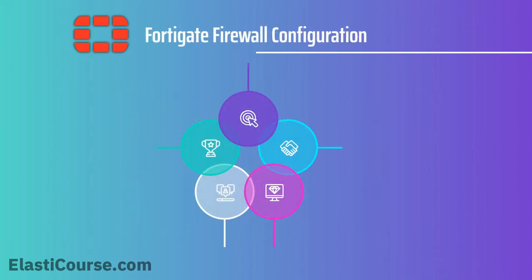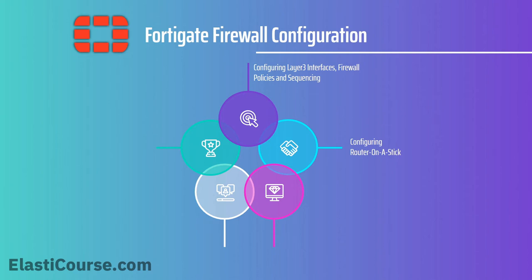Now that we've deployed the FortiGate, I will walk you through different firewall configuration setups starting from the basics, like how to configure Layer 3 interfaces, firewall policies, and how to sequence these policies. Also how to configure router-on-a-stick, which is used to create sub-interfaces and VLAN trunking, and how to configure static routes so you can route networks statically.